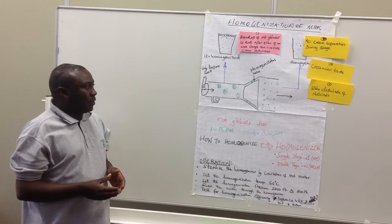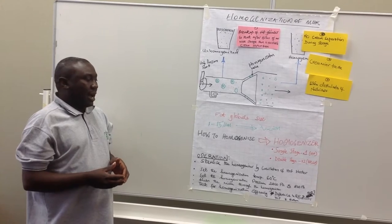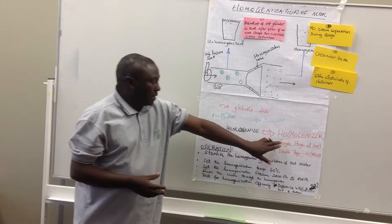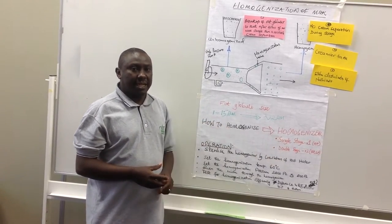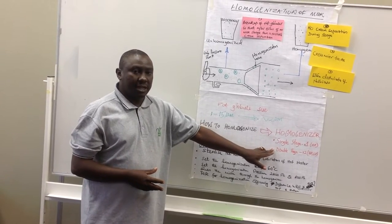So how do we homogenize? We homogenize milk by using a homogenizer. There are two types of homogenizers: single-stage homogenizer that uses high pressure, and double-stage homogenizer that also uses high pressure but homogenization is done twice.